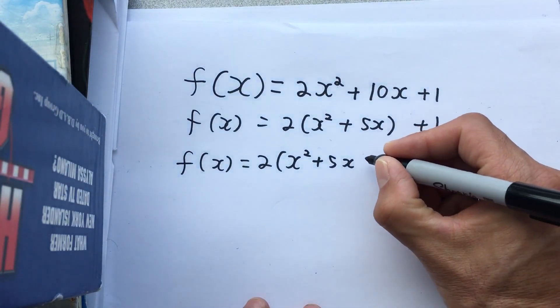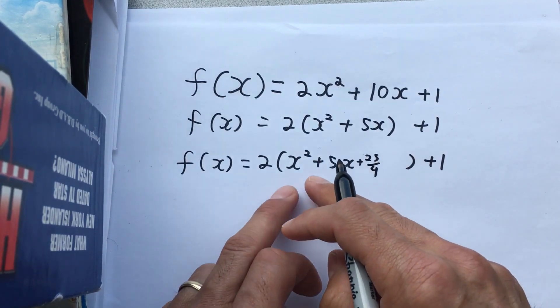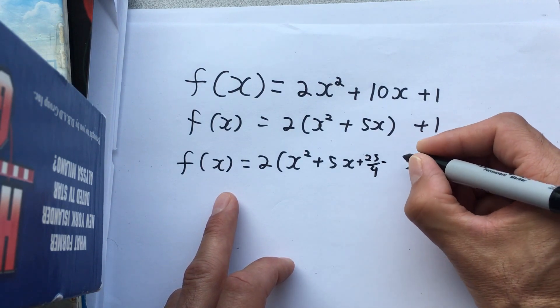Okay, so we're going to add 25 over 4, but that immediately changes the value of this equation. So I'm going to also subtract 25 over 4.